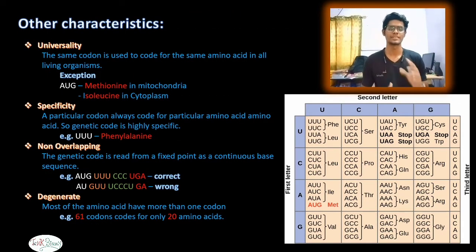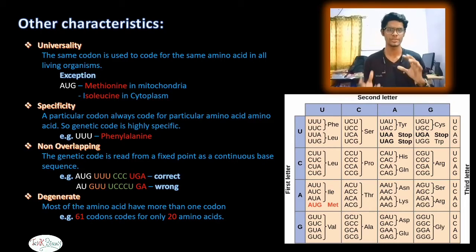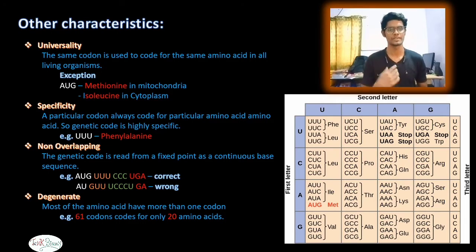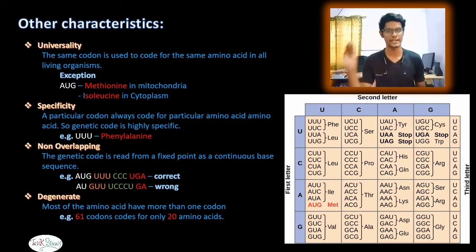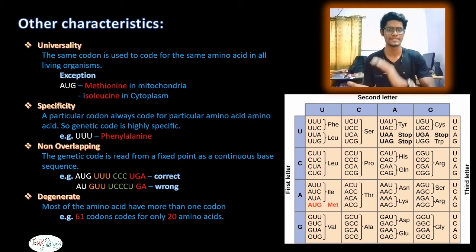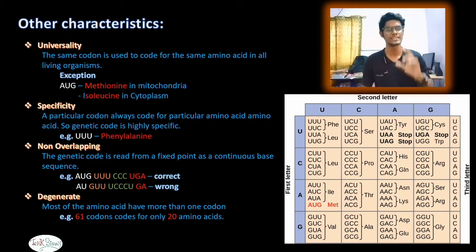Now let's look at the characteristics of genetic code. The first characteristic is universality: the same codon is used to code for the same amino acid in all living organisms.